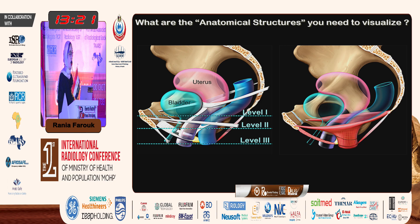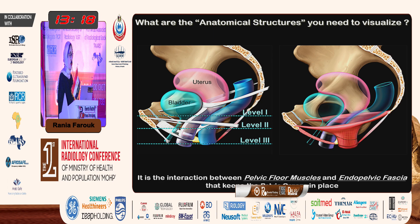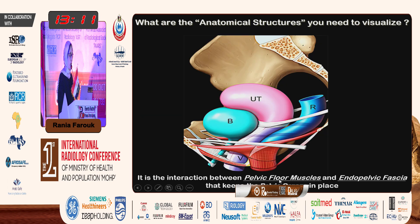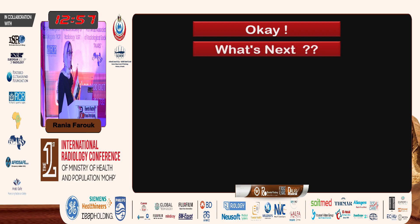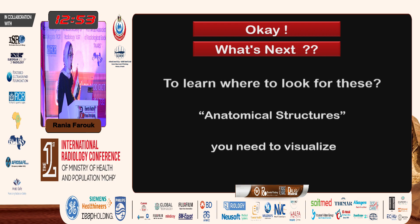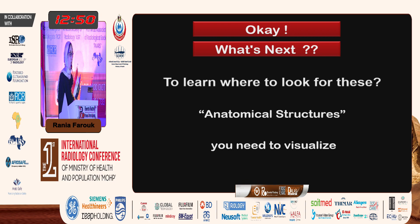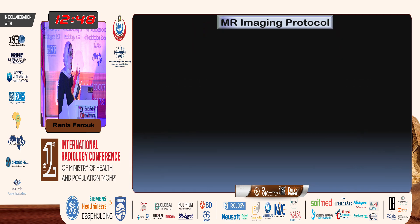The second question: what anatomical structures do you need to visualize? The pelvic organs are kept in place by the interaction between the pelvic floor muscles, the endopelvic fascia, and the pelvic organs. You need to see the pelvic floor muscles, the endopelvic fascia in the static images, and the pelvic organs in the dynamic MR. Now let's summarize and apply — let's go and learn where to look for these anatomical structures.